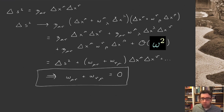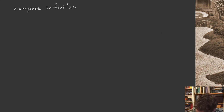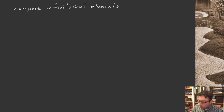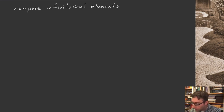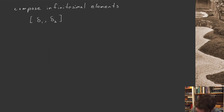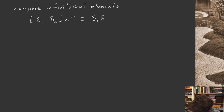Let's think about how Lie algebra elements of Poincaré compose. If I compose infinitesimal elements, they compose through a commutation relation. So delta_1 composed with delta_2 means taking the commutator of these two deltas acting on x^μ, defined as delta_1(delta_2(x^μ)) minus delta_2(delta_1(x^μ)). Acting with delta_1 first takes x^μ to x^μ + a_1^μ + omega_1^μ_ν x^ν.